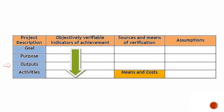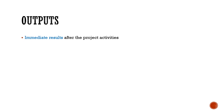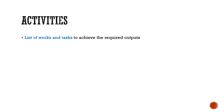The third terminology in the row is the output. Now the last part of the row is the activities. Activities are the list of works and tasks to achieve the required outputs. We have to identify what outputs we are going to achieve and what activities are going to be done — listed out bullet-wise and clearly defined.